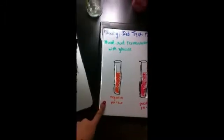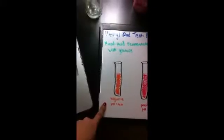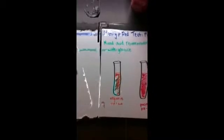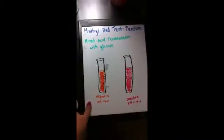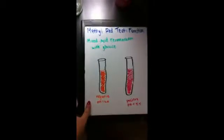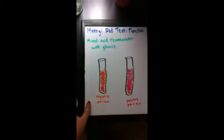When the pH is above 6.0, the result is negative, and the color of the broth will turn yellow or orange. That's a negative result.